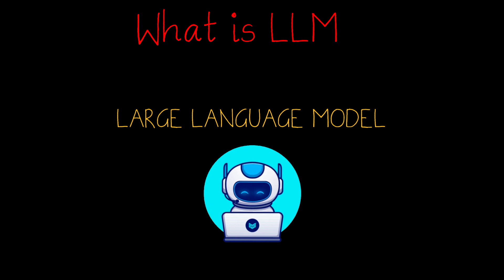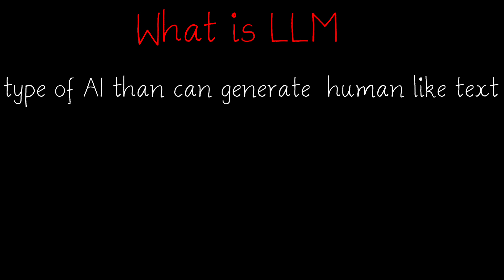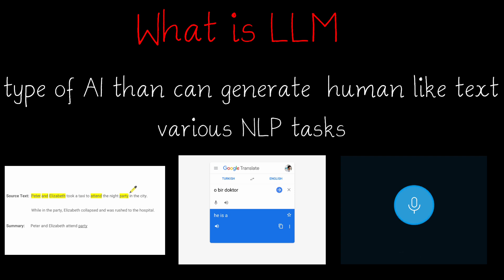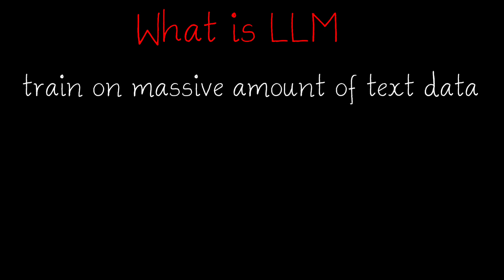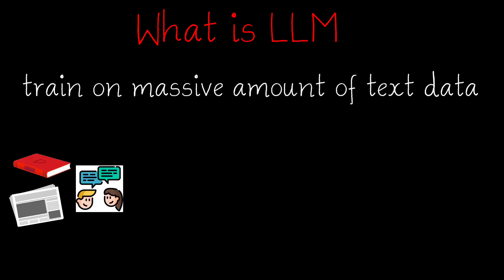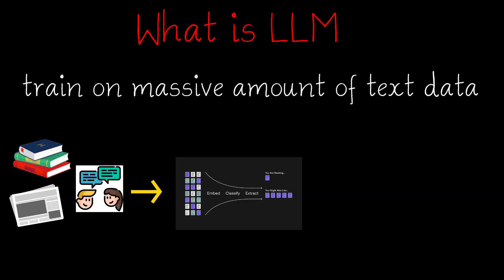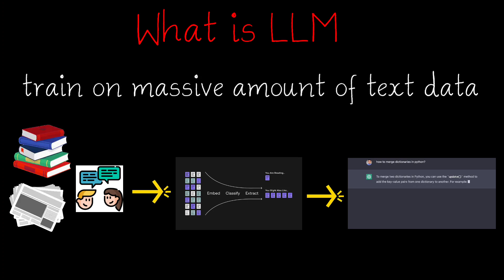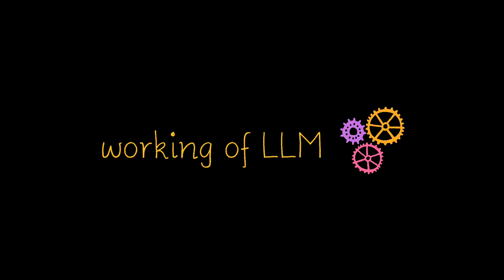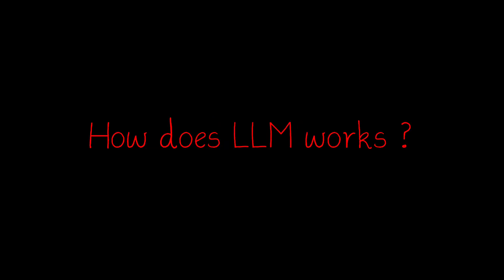First, what is LLM? LLM stands for Large Language Model. Basically, it is a type of AI that can generate human-like text and perform various tasks like text summarization, translation, speech recognition, and many more. These are trained on a massive amount of text data like books, articles, and conversations, which allow them to learn patterns and relationships that exist in that language. This makes LLM capable of generating text. These points will be more clear when we look into the working of LLM, so let's dive into how LLM works.